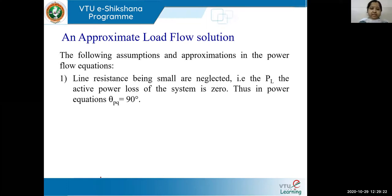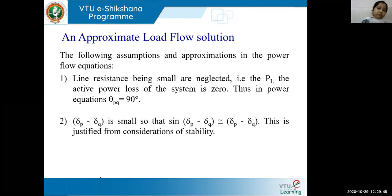Assumption 1: line resistance is very small and is neglected. When you neglect line resistance, active power losses PL become zero, and θPQ becomes 90 degrees. Assumption 2: the difference δP minus δQ is very small, so sin(δP − δQ) ≈ δP − δQ. This is justified from stability considerations.